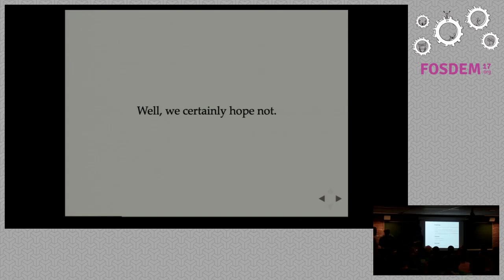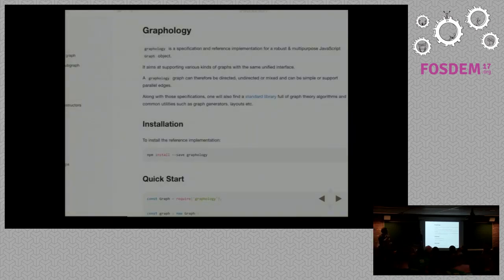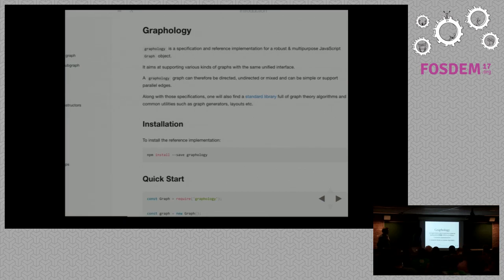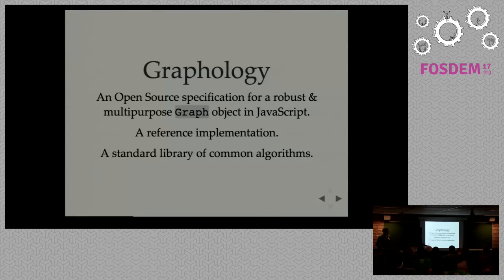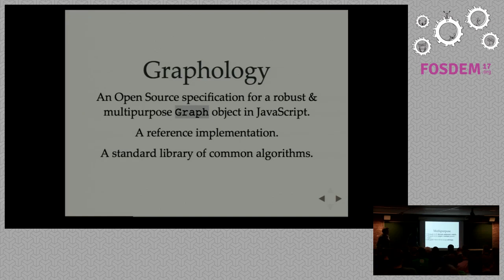What we propose today is something we called Graphology — because NPM is a wild place and when someone takes a name you can't take it back. So what is Graphology? It is a specification for a robust and multipurpose graph object in JavaScript. This is a specification, not a library. But you have a reference library which is the reference implementation of this specification that you can download and use. You also have a standard library attached to it which contains classical algorithms: layouts, generators, HITS, etc.